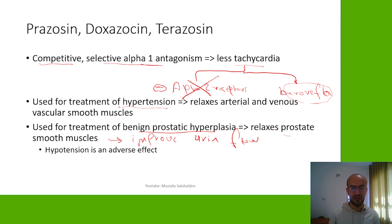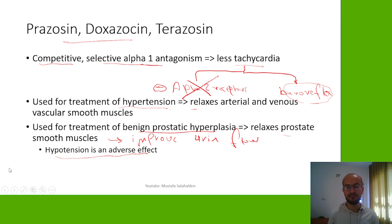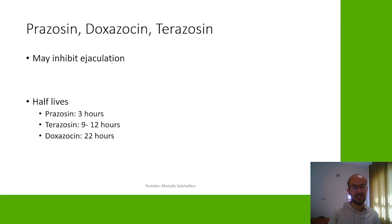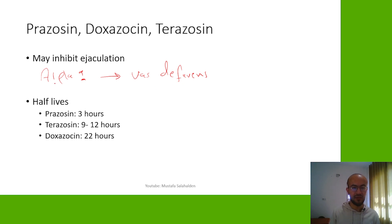Because these drugs decrease blood pressure, hypotension is a potential adverse effect in patients with BPH treated with these drugs. Additionally, these drugs may inhibit ejaculation, because alpha-1 receptors are present in the vas deferens. When those receptors are blocked, the vas deferens may relax and ejaculation can be inhibited.